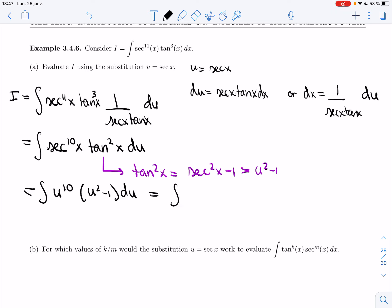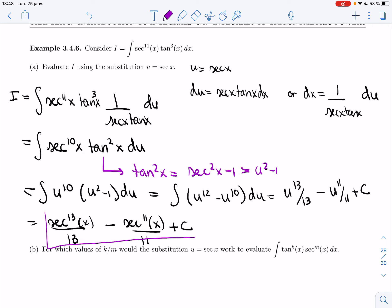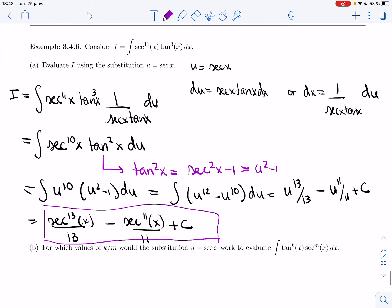So I need to integrate. Same thing as always when you have polynomials like that. You expand. You'll get u12 minus u10 du, so u13 over 13 minus u11 over 11 plus c. Finally we put secant back in, and so we'll get secant to the 13x over 13 minus secant to the 11x over 11 plus c.